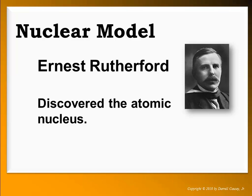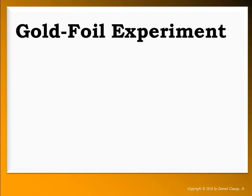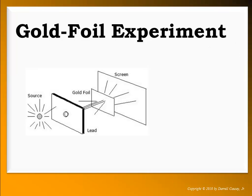In the process of discovering the atomic nucleus, he also discovered that the atom is mostly space, and that the nucleus, even though that's where all the mass is, is about one trillionth the volume of the entire atom.